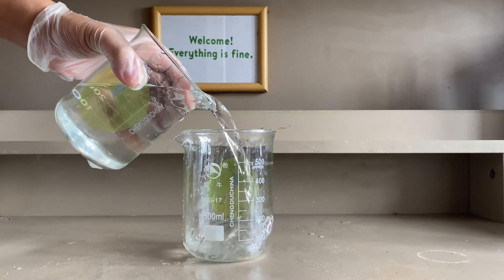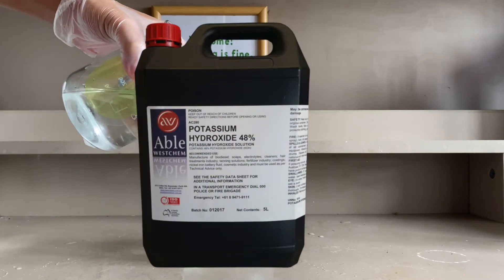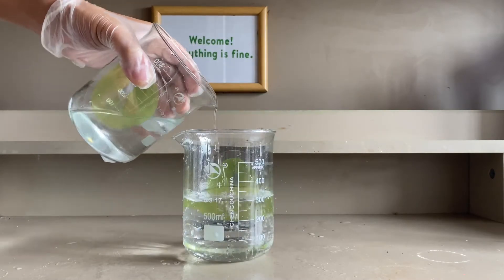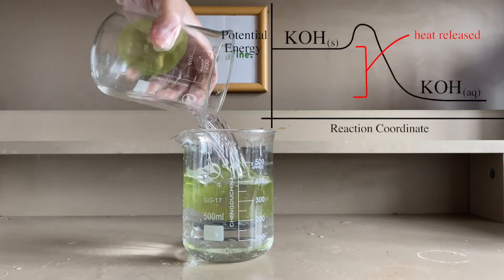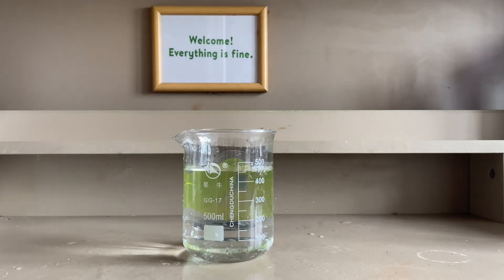When caustic potash, aka potassium hydroxide, dissolves in water, it produces an alkaline solution along with lots of heat. In this video, we're going to use that heat to boil an egg.